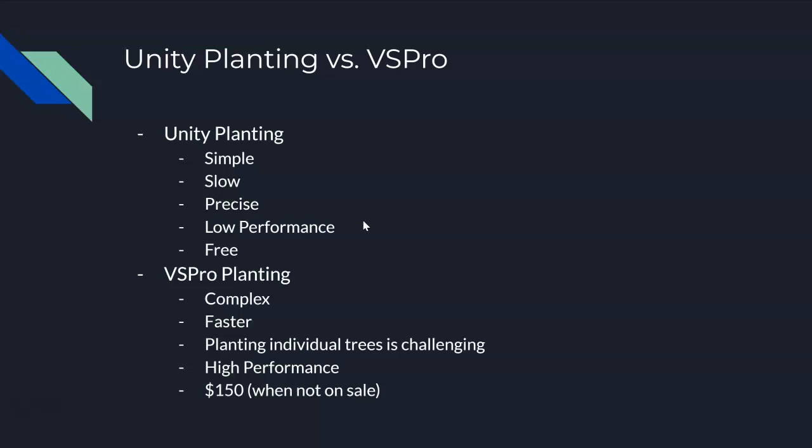The reason VS Pro is more complex is there are just a lot more knobs you can tweak. I would say we're only using probably 40% of its capabilities, because the other 60% either we don't know about yet or we just don't use. It's really good software. It's much faster — instead of planting one tree type at a time, it has this concept called biomes.